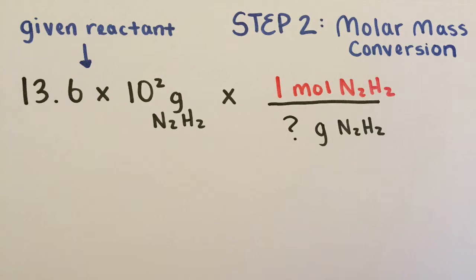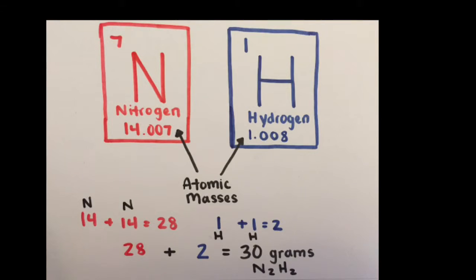A conversion factor must be used. As we set up for this conversion, we know that grams of N2H2 must go in the denominator since it needs to be cancelled out. The one mole of N2H2 will remain in the numerator. We must use the periodic table to determine the mass of N2H2 so we can use it in the denominator. It is 30 grams because two nitrogens equals 28 grams and two hydrogens equals 2 grams and the sum of those is 30 grams.